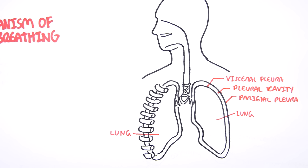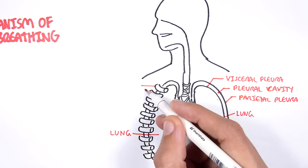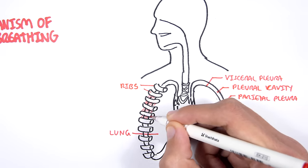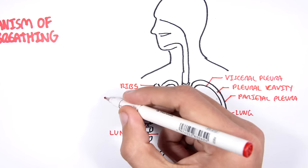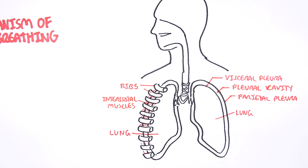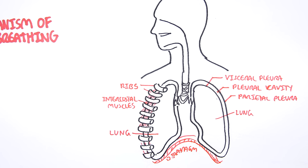Around the lungs we have the ribs. Connecting the ribs we have muscles known as intercostal muscles — there are three intercostal muscles and they are used for respiration. We also have another important muscle used in respiration called the diaphragm. So the two important muscles for respiration are the diaphragm and the intercostal muscles.